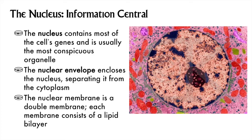The nucleus is often analogized to the brain of the cell. It is usually the largest organelle, and when we were looking at those cheek epithelial cells, it was the only organelle we could clearly see. The nuclear envelope is the double layer of phospholipids that encloses the nucleus. To be more clear, a plasma membrane is one bilayer, and the nuclear envelope is two bilayers.